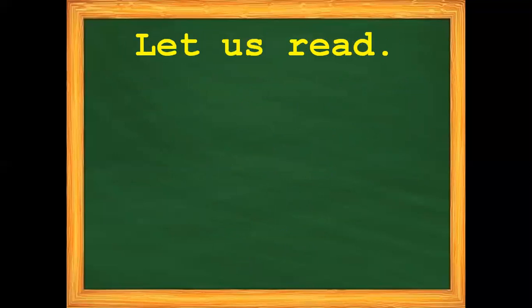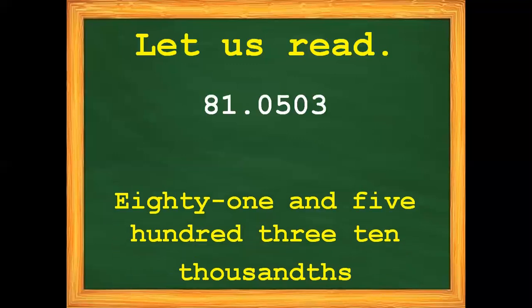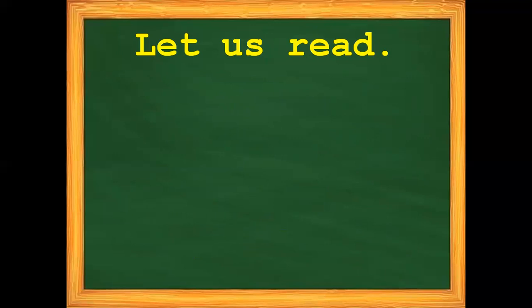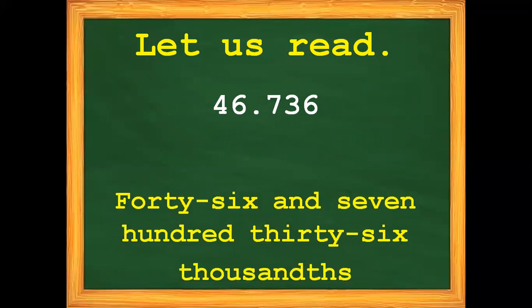Let's proceed with example number 3. First, let's read the decimal numbers. How do we read this decimal number? It is 81 and 503 thousandths. How do we read this decimal number? 46 and 736 thousandths.